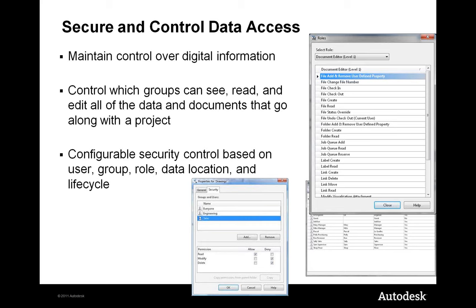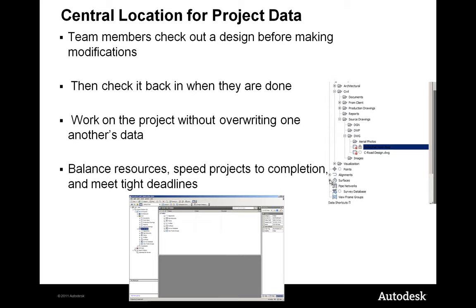Vault also supports Windows-type security — so you might put someone in the editor role, but on a specific project you could dial them back to view-only access. Vault also supports document workflow, or file states — files could go from 'under change' to 'in review' to 'released,' and your access to a file changes accordingly. For instance, when a file goes to 'in review,' even editors can't edit it because others are reviewing and approving it. This gives you a level of control that's lacking with just managing files in Windows.